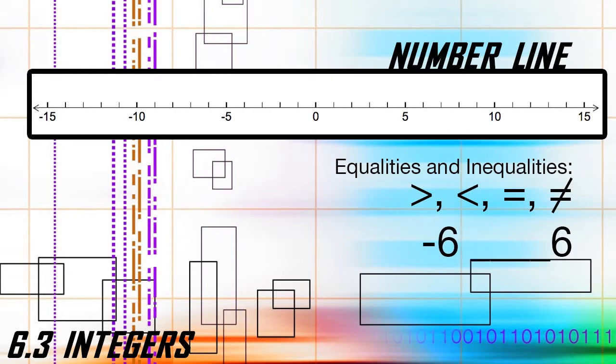Question number two: negative six compared to six. With this problem, we know that negative six and six are two different integers, making them not equal. So we fill in the not equal sign.